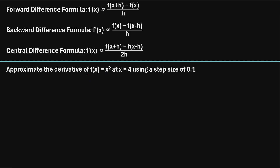One way to approximate this derivative is by using the forward difference formula, which says f prime of x — at the specific x value you're interested in — is approximately equal to f of x plus h, where h is the step size that you've decided to use, minus f of x, all divided by h, the step size.